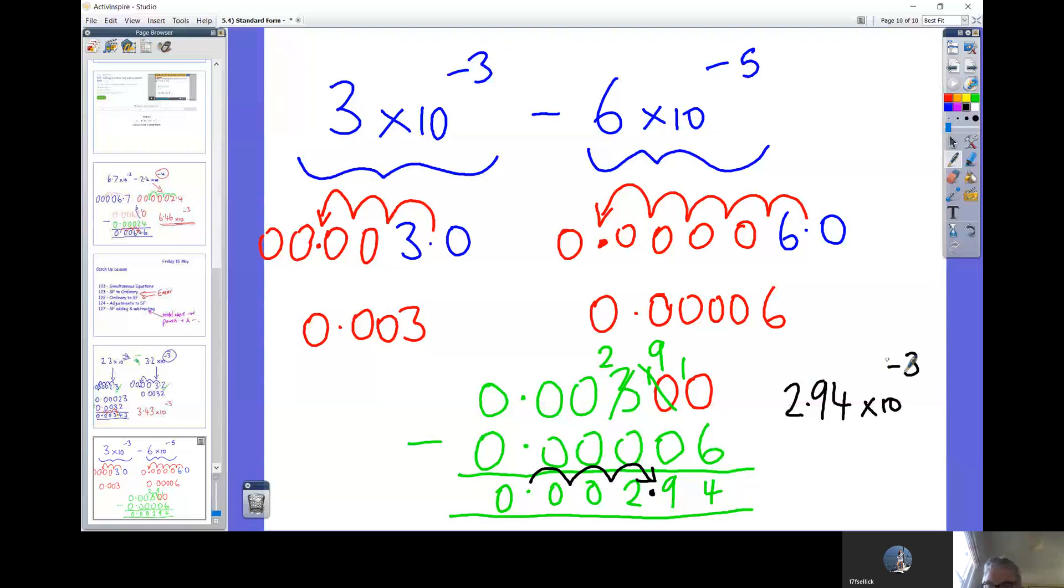So that's 2.94 times 10 to the minus 3. Remember it's a minus because it's a small number. So Fliss, which bit of that do you think you were getting stuck on? The red bit or the green bit?